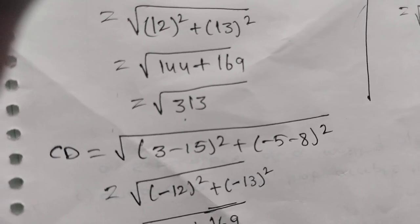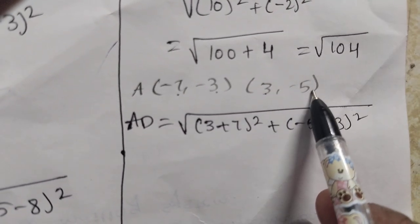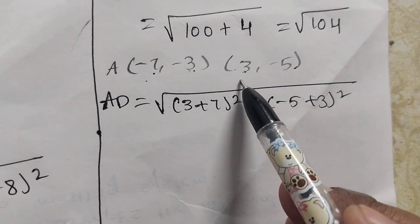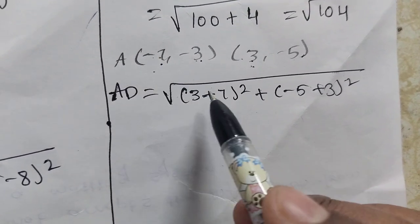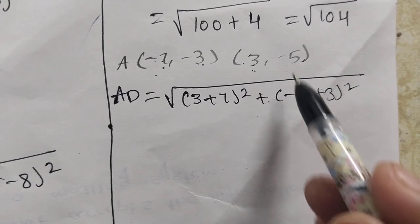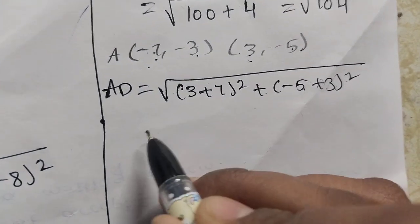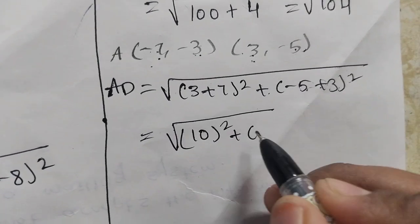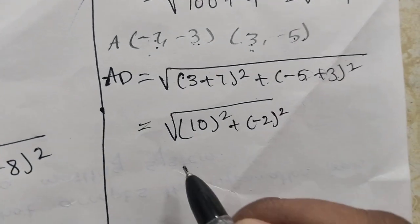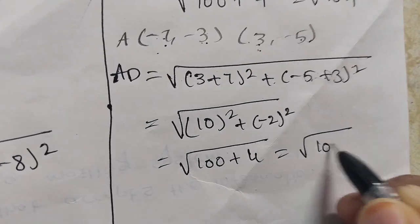Next, we find AD. A is (-7, -3) and D is (3, -5), so (x1, y1) and (x2, y2). AD = √((3 - (-7))² + (-5 - (-3))²) = √((10)² + (-2)²) = √(100 + 4) = √104. So BC = AD = √104.